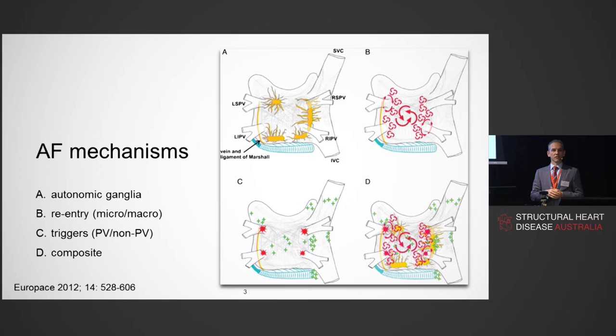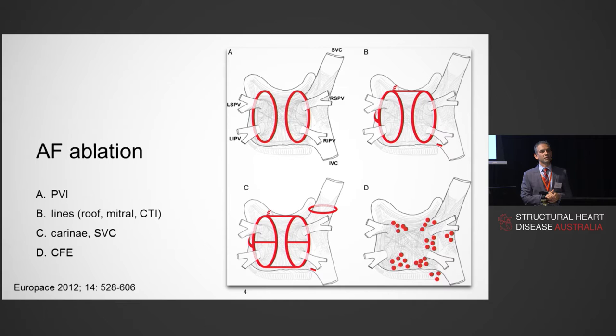In reality, panel D is usually the case — a mix of mechanisms. What we do know is that the pulmonary veins are key. When we look at AF ablation and superimpose that, the standard circumferential wide-area encircling of the ipsilateral pulmonary veins will affect much of those mechanisms.